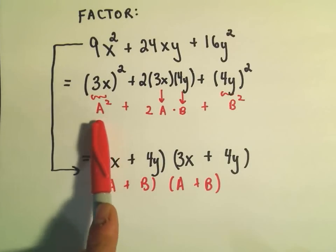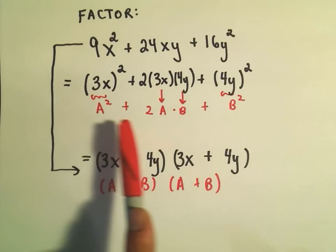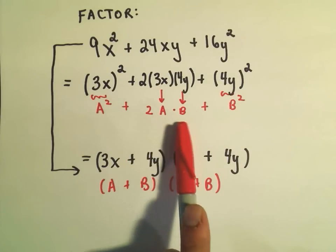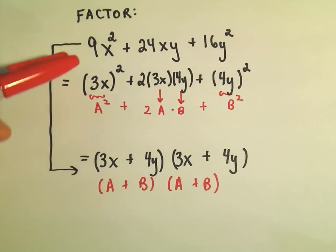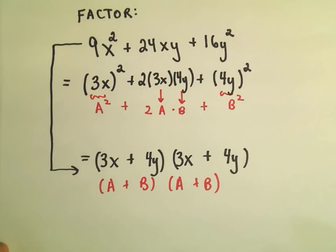But again, you can really think about rewriting things and noticing this 2ab term in the middle. Alright, I hope this example makes some sense. Again, factoring can be tricky. It's just recognizing all these different little tricks. But I'm going to do some other examples as well. Hopefully, all together, they'll make some sense for you.